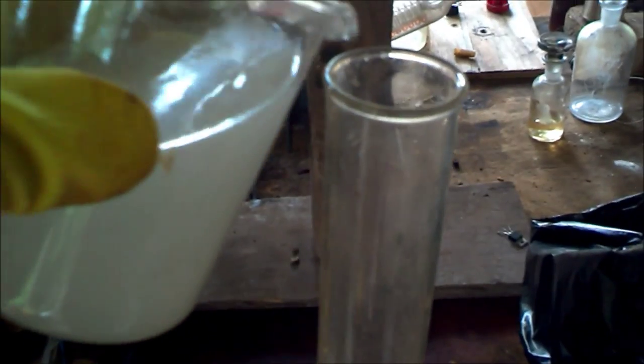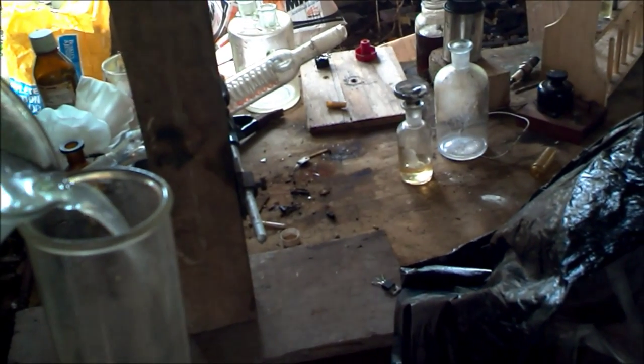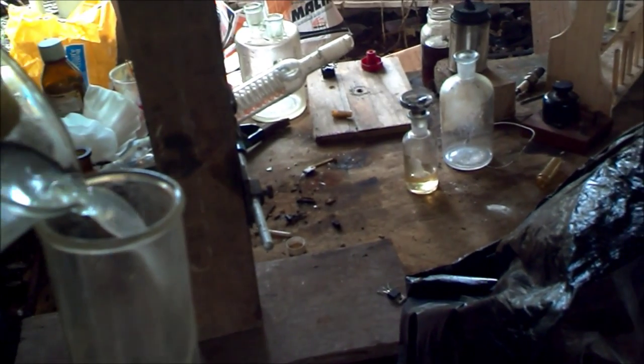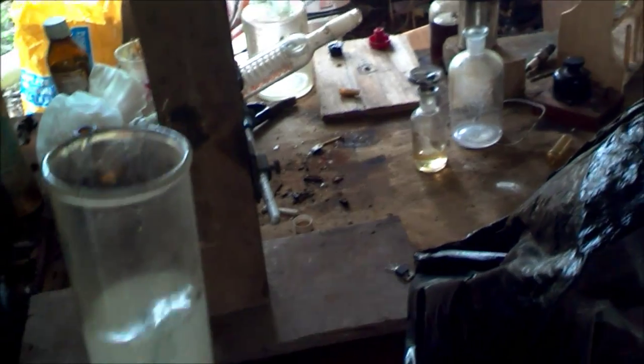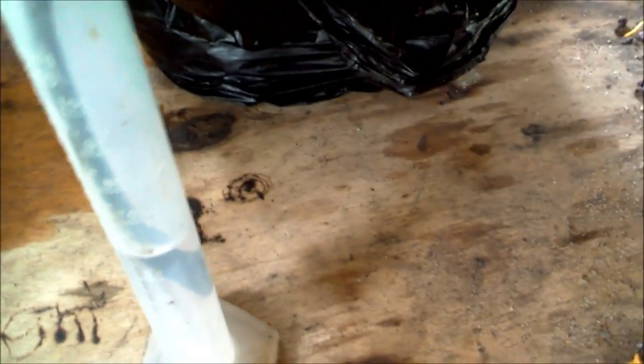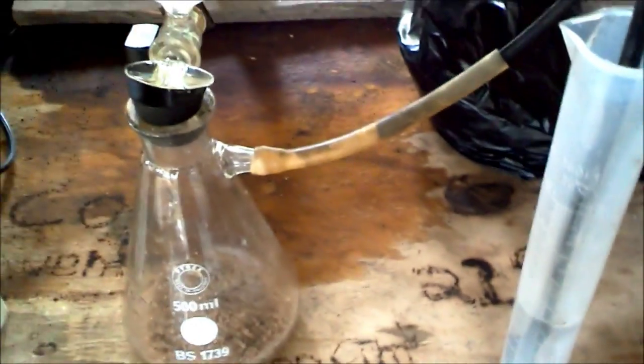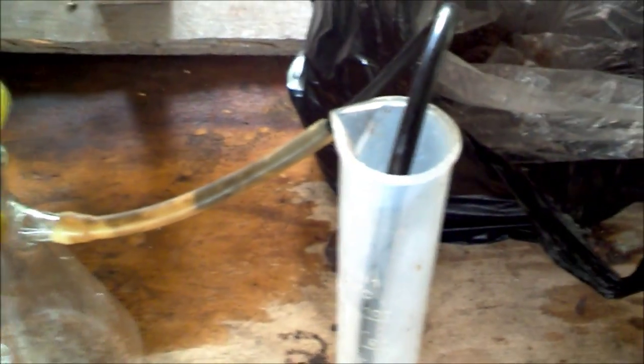Now get the sodium hydroxide solution and carefully pour it into the separatory funnel. Take the tube and put it into the water. This should be distilled water. Now put it on the top.